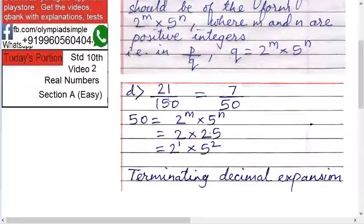Next is 21 upon 150, which can be written as 7 upon 50. Now focus on 50. We want 2^m × 5^n. So 50 is 25 times 2. 2 means 2 raised to 1, and 25 means 5 raised to 2. So is it 2^m × 5^n with m and n positive integers? Yes. That's why 21 upon 150 is a terminating decimal expansion.